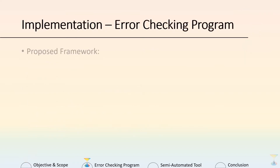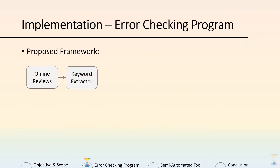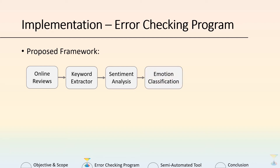For the error checking program, the proposed framework is as follows. We will first use keyword extractors and online reviews as inputs to extract the potential concepts to be checked. The information is then passed into sentiment analysis to get the polarity scores and will be classified into emotion labels of the hourglass. Lastly, with all this information, it will be checked against the existing knowledge base.